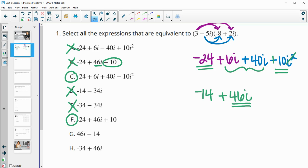G is a positive 46i, which we have, and a negative 14. So G is good. H would be wrong because we don't have that negative 34.